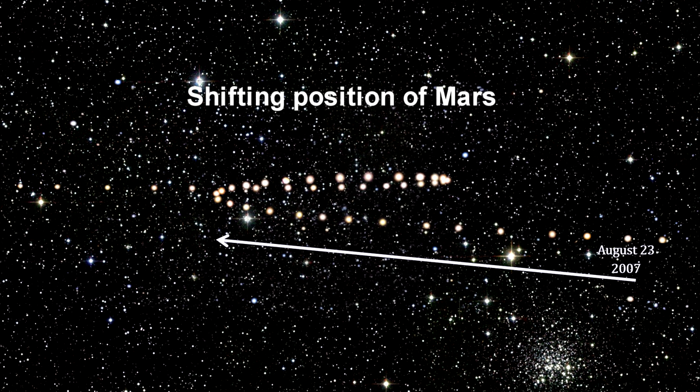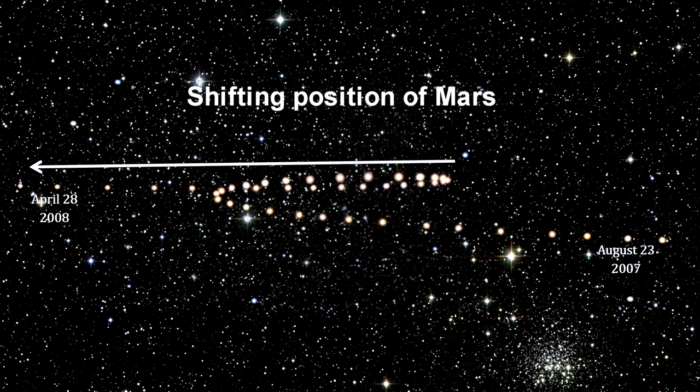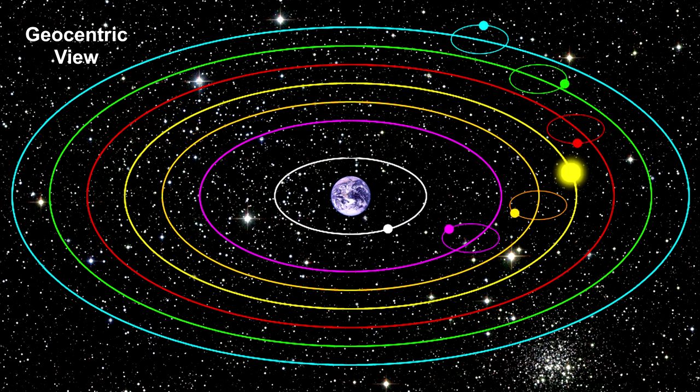Planets were identified as different from stars because they changed their position over time, whereas the stars were seen to be eternally fixed in place. The earth-centric model stood the test of time for over 1,500 years.